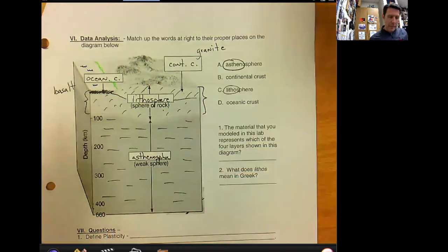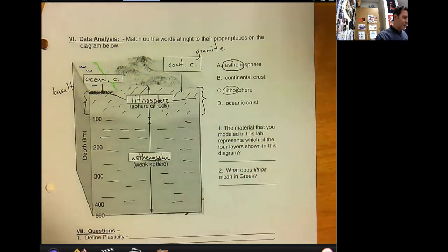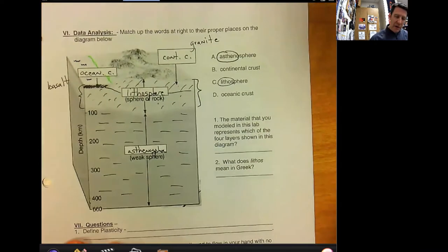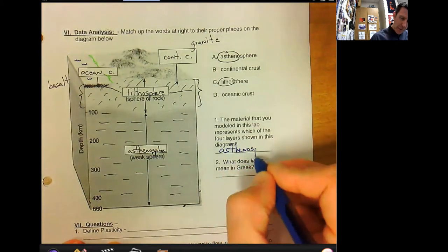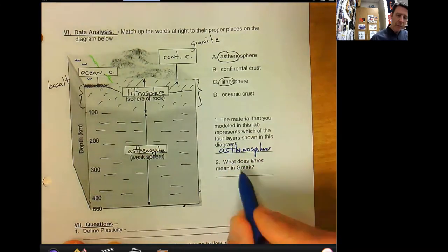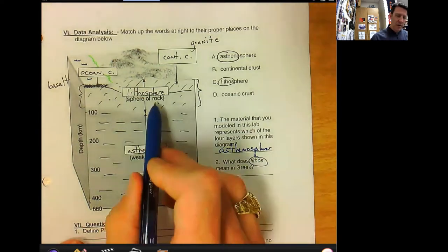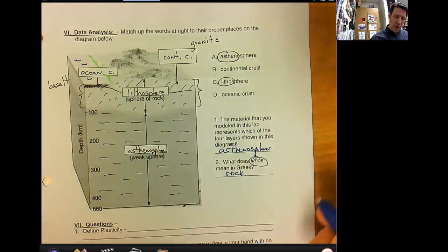Right there, okay. The material that you model in this lab represents which of the four layers shown in this diagram? Well, obviously it's the weak, mushy, flowy one, and that is asthenosphere. What does the Greek word lithos mean? Lithos means rock or stone.